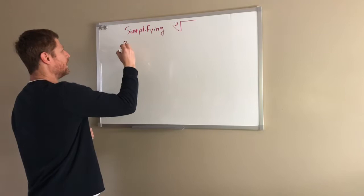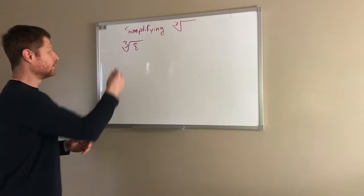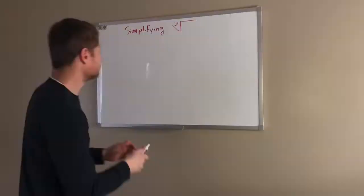So way in the beginning of the year we were simplifying things like this: the cube root of 8, which is what we consider to be a perfect cube because the cube root of 8 is 2.